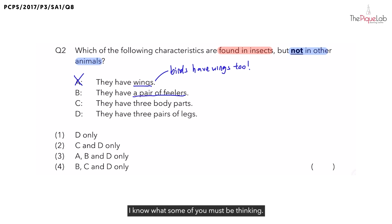I know what some of you must be thinking. You see the word feelers and you think only insects have them, so you think B is correct. But do you know there are other animals besides insects that also have feelers? Can you think of any examples? One good example is the prawn. If you have ever seen a prawn with its head attached, I'm sure you can see that they have two feelers coming out from the top of their head.